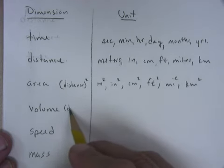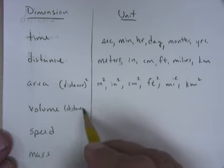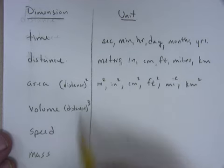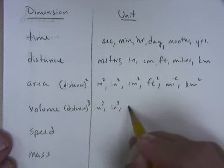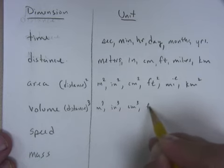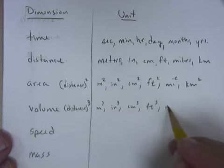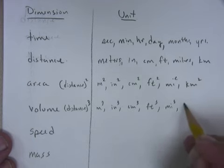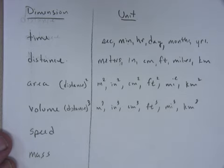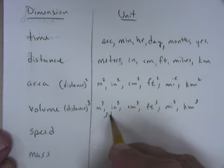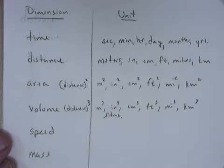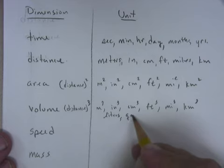Volume. It's kind of similar to area, but instead of it being squared, it's cubed. So it would be meters cubed, inches cubed, centimeters cubed, feet cubed, miles cubed, kilometers cubed. That's volume. Volume can also be any kind of liters as well, or like gallons.